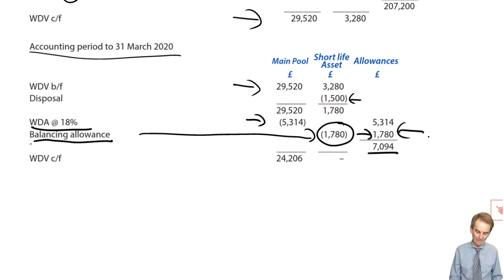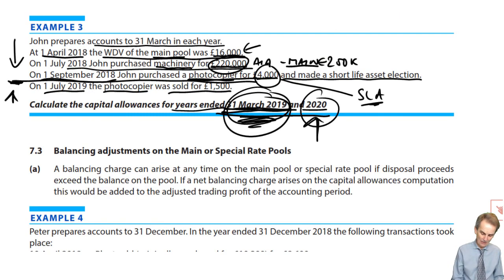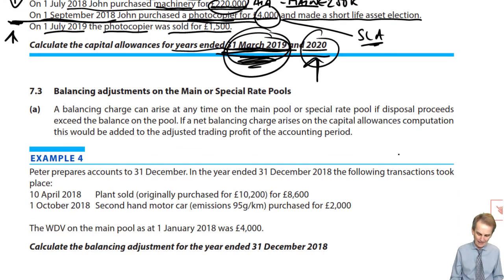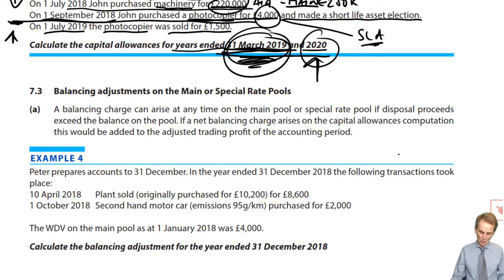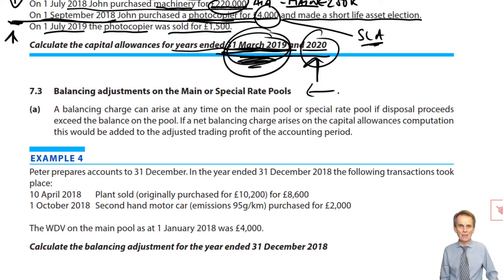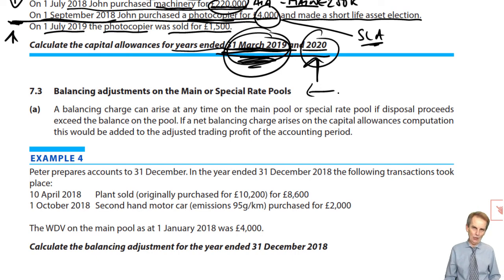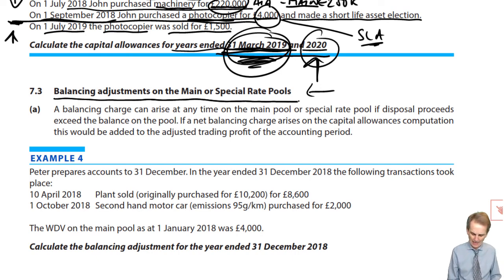In relation to short life assets, you probably won't see them in the context of an unincorporated trader, but an examiner can use whatever numbers he wishes. Where you're more likely to see this is in a corporate tax context, since companies may regularly spend in excess of £200,000 on qualifying plant and machinery. Have a rework through that and join us in the next session, where we consider whether balancing adjustments can arise on the main or special rate pools.